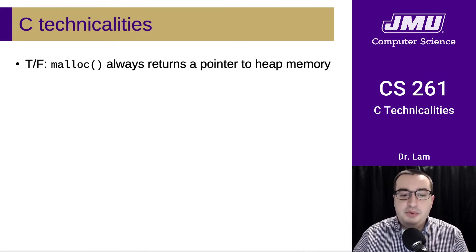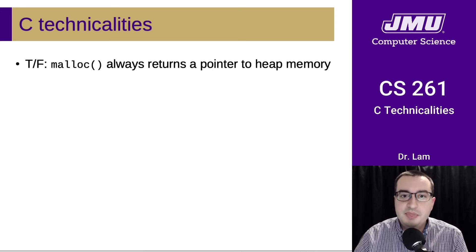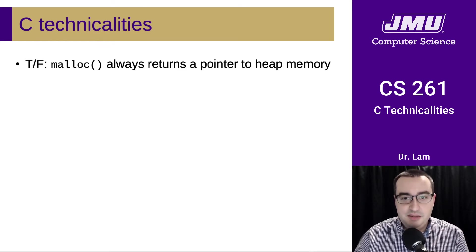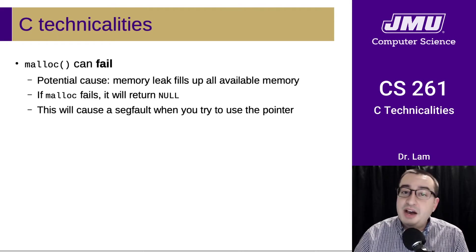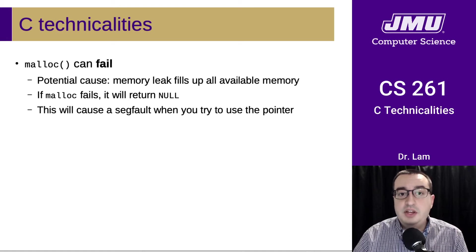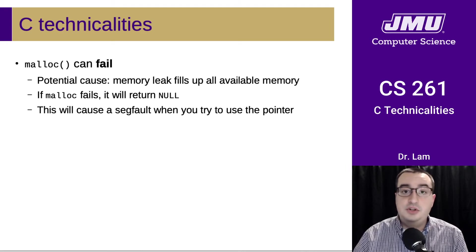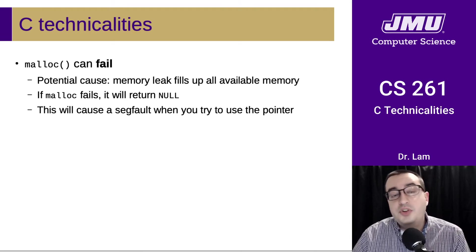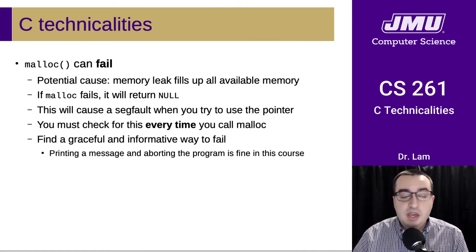True or false: malloc always returns a pointer to heap memory. If it returns a valid pointer, it will always return a pointer to heap memory. Unfortunately, malloc can fail. One potential cause is a memory leak in your program that has filled up all the available memory in the process's address space. If that happens, malloc is going to return null. There are other error conditions that might cause that as well. This will cause a segfault when you try to use the pointer, because it's a null pointer.